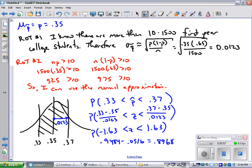And that tells us there is an almost 90% chance that if you ask 1,500 college students if they applied to another university, you're going to get within 2 percentage points of the real value. There's an almost 90% chance that your p̂ is going to be really close to 35%, within 2 percentage points.